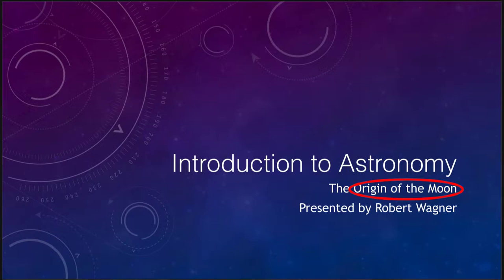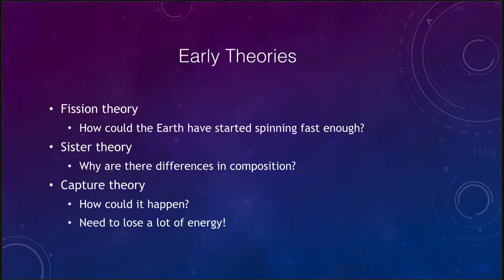There have always been different theories as to where the moon came from. One was the fission theory: that the Earth was spinning and spun fast enough that a chunk of material spun off of it and eventually formed the moon. The big problem with that is why was the Earth spinning fast enough for material to be able to come off of it? It would have to have been spinning incredibly fast, and it's not really known how that could have happened.